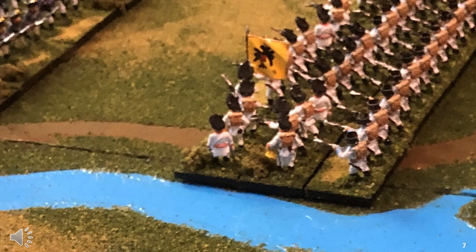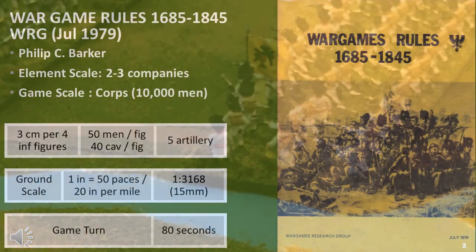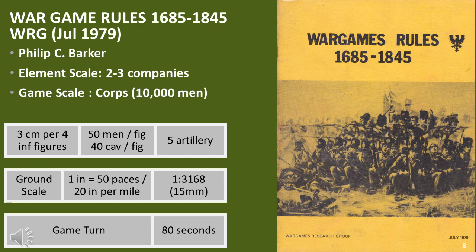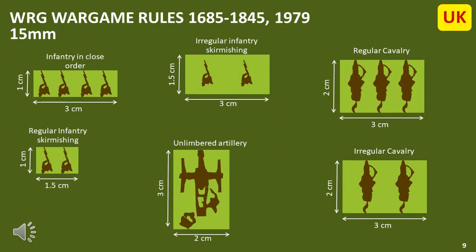Let's go through some of the rules post-1979 to today. Starting with the classic WRG Napoleonic rules, The War Game Rules 1685 to 1845 by Philip Barker, putting skirmishers and artillery to one side, all bases were similar in terms of width, which for 15mm was 3cm. Artillery was 2cm wide, which was done to allow each figure to represent two guns, allowing players to form batteries of 6 to 8 guns. Skirmishers were 1.5cm wide because they were actually half bases, to avoid double-basing figures.